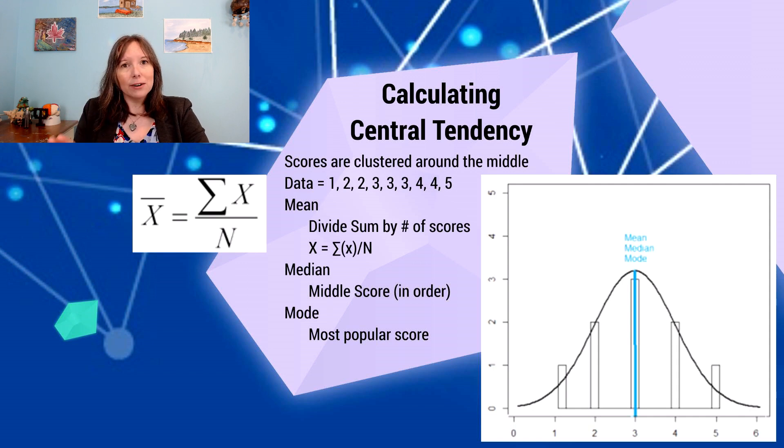Now, if you take that very tiny data set and you graph it, we can see here in the bell curve that again, three is going to be the mean, median, and mode for this curve. So that's just an example of where these numbers are coming from.